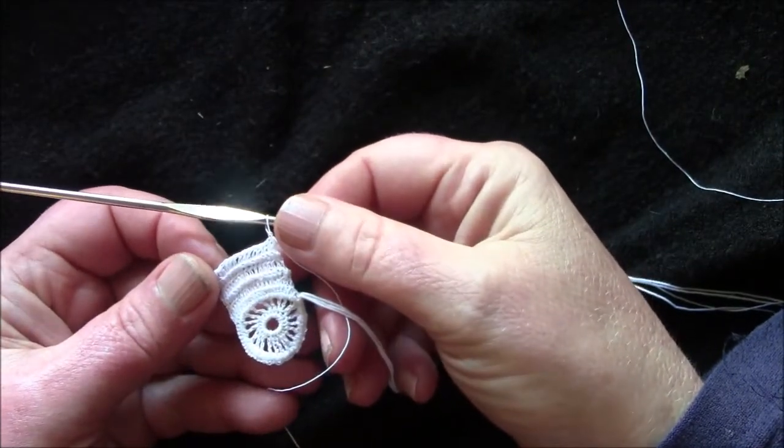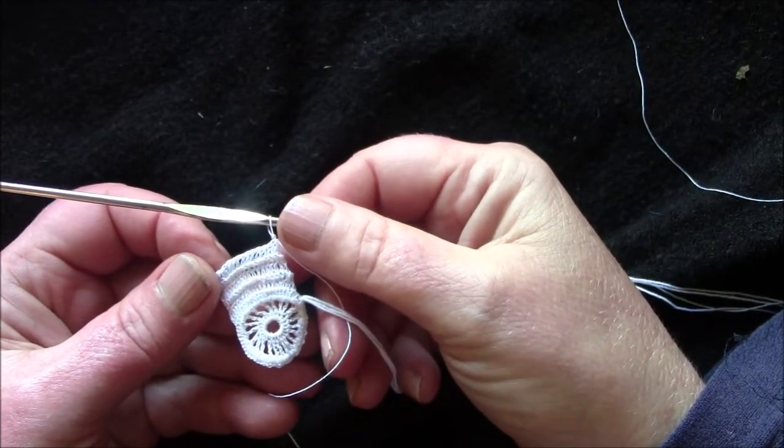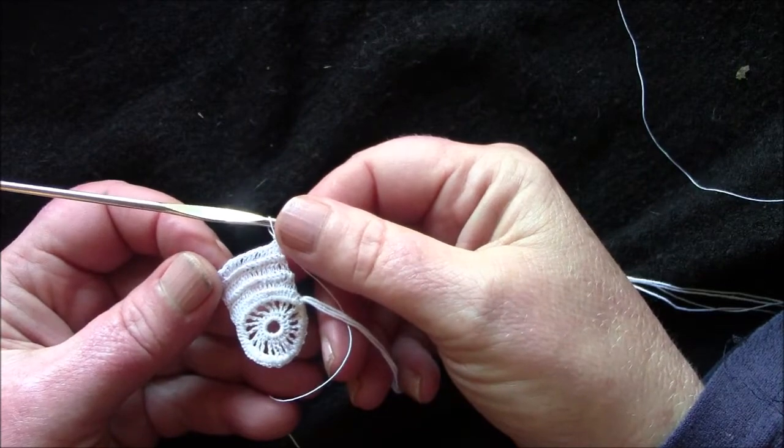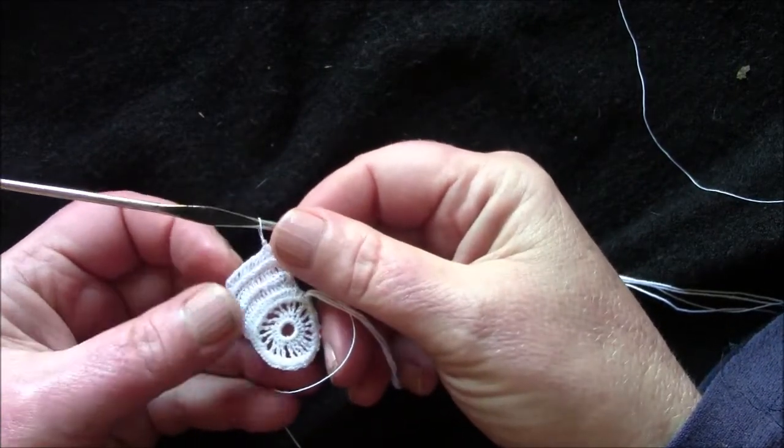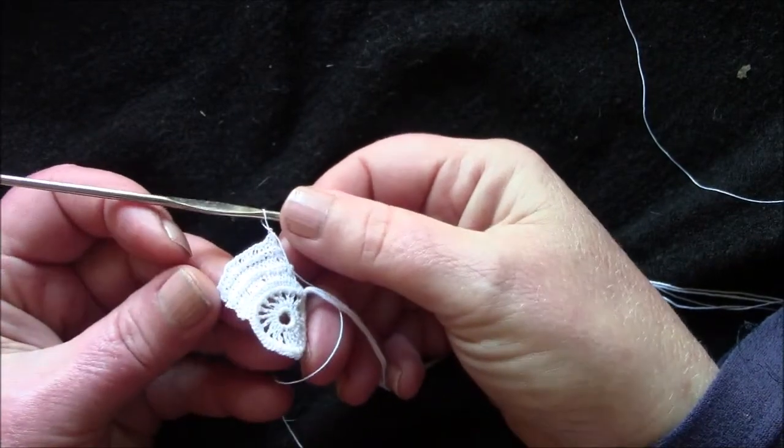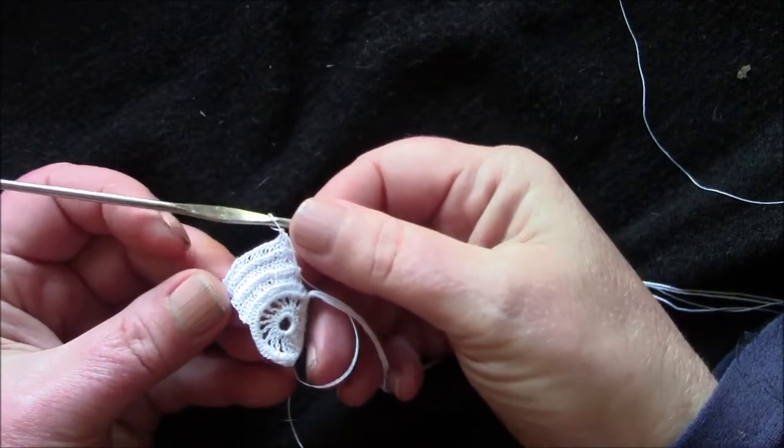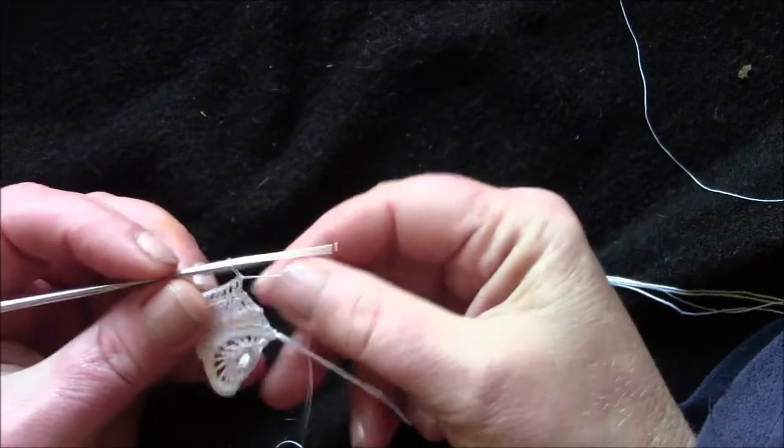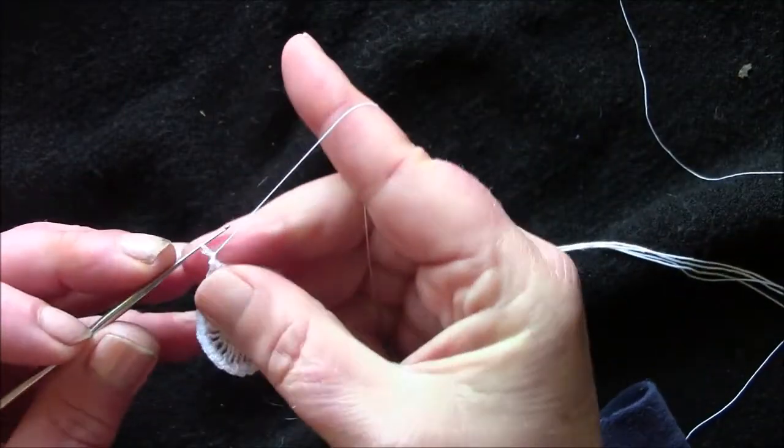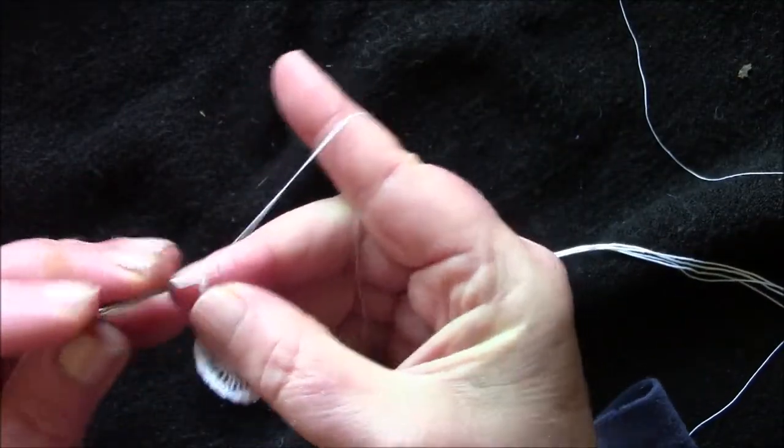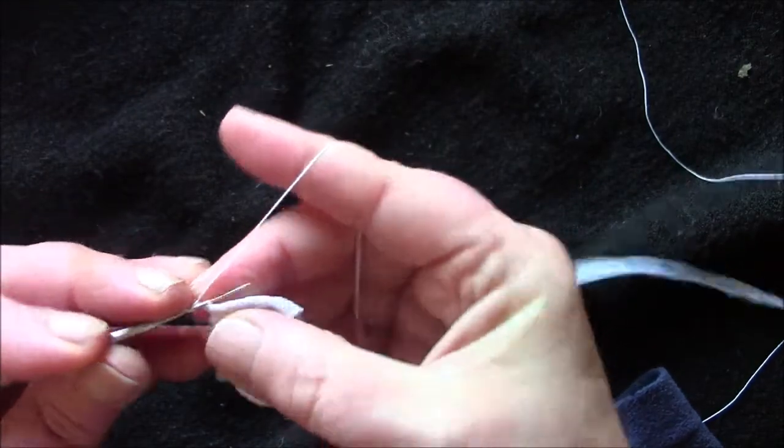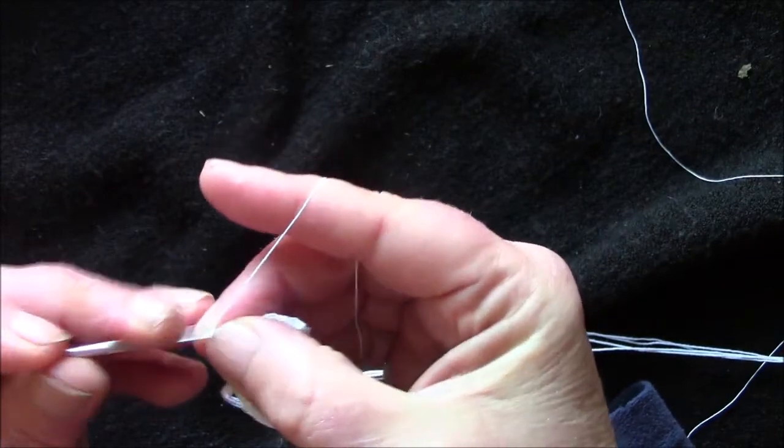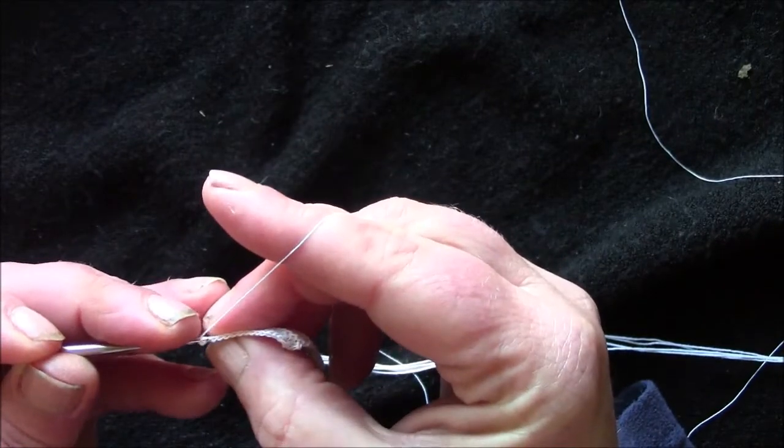These are the six rows: one row double, one row treble, one row double, one row treble, one row double, one row treble, all worked in the back stitch. You can see the ribbed effect that it gives. The next thing you need to do is a row of double crochet, and I'm again doing it in the back stitch although it doesn't really say so, but I presume that's what they want you to do.